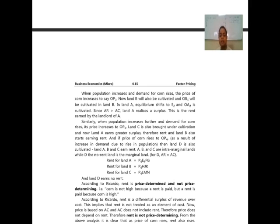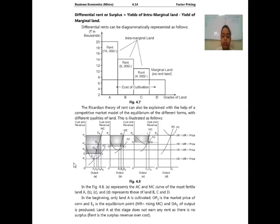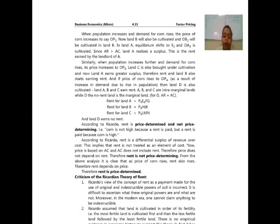When the population increases and demand for corn rises, the price of corn increases to OP2. Now land B will be cultivated and OB1 output is produced on land B. In land A, equilibrium shifts to E2 and OA2 is cultivated. Since AR is greater than AC, land A releases a surplus — this is the rent earned by the landlord of A. When population increases further and demand rises, price increases to OP3. Land C is also brought under cultivation and land A earns a greater surplus, while land B also starts earning rent. If price rises to OP4 due to further population increase, land D is also cultivated. Lands A, B, and C earn rent and are intramarginal lands, while D is the no-rent marginal land.